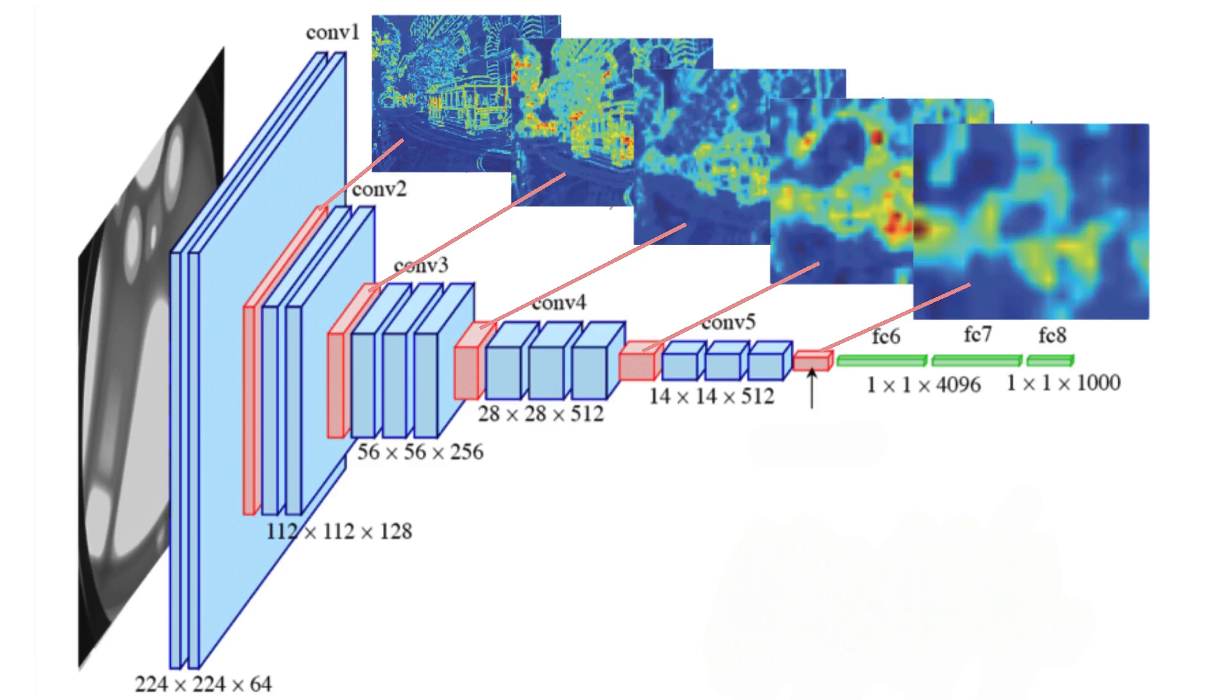This is what pooling is able to bring to the network, the translational invariance capability. Other types of invariance can be obtained through other means, but the translational one is easy to bring into the network with the pooling layers.